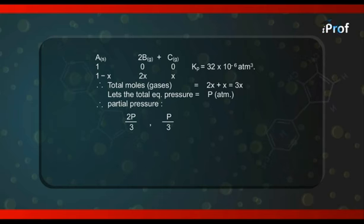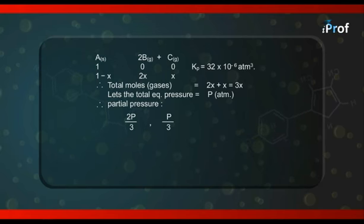The mole fraction for B gas will be 2X upon 3X that is 2 by 3 multiplied by total pressure P. So, partial pressure for B is 2P by 3 and partial pressure for C is P by 3.